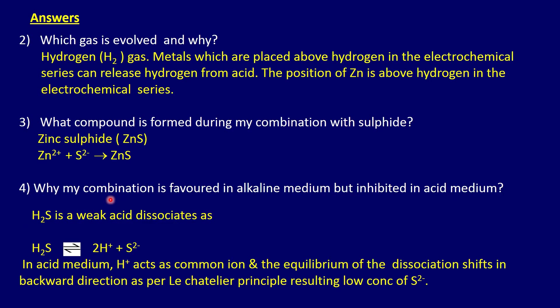Now for the answers to the remaining questions. Question two: which gas is evolved and why? The answer is hydrogen gas. The metals placed above hydrogen in the electrochemical series can release hydrogen gas from acid, and zinc is positioned above hydrogen in the electrochemical series. Question three: what compound is formed during combination with sulphide? It is zinc sulfide, formed from zinc ions and sulfide ions.